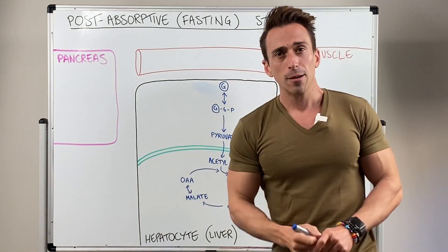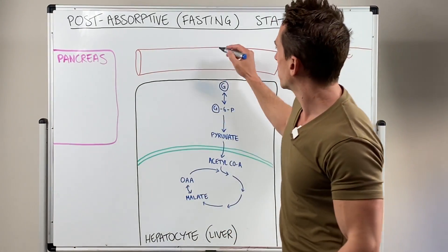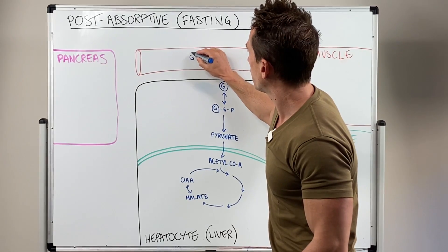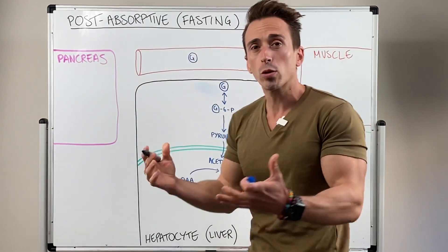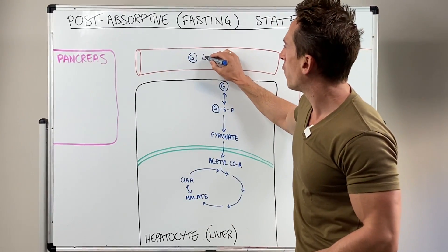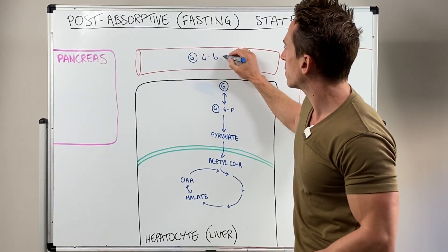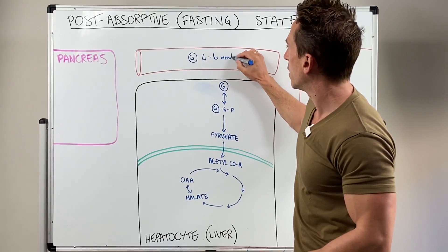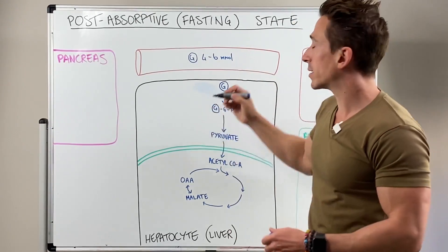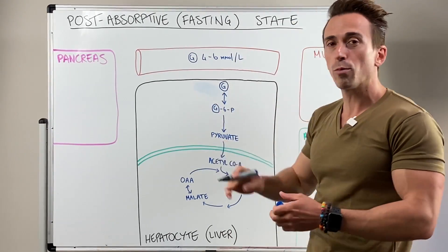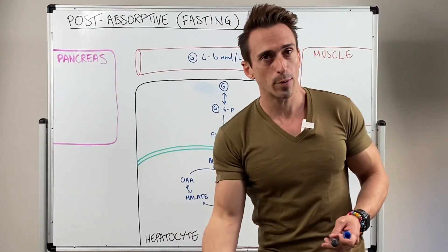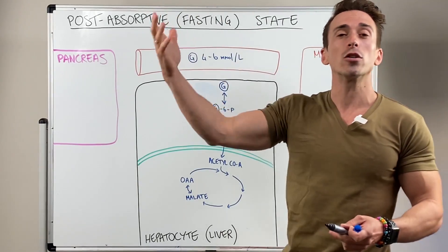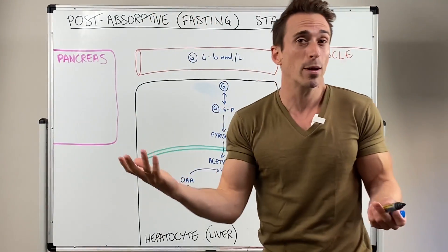Normal glucose levels sit between 4 to 6 millimoles per liter. This is where we want it to sit. If it goes too low, blood glucose levels dropping too low, we need to increase it. If it goes too high, we need to bring it back down.